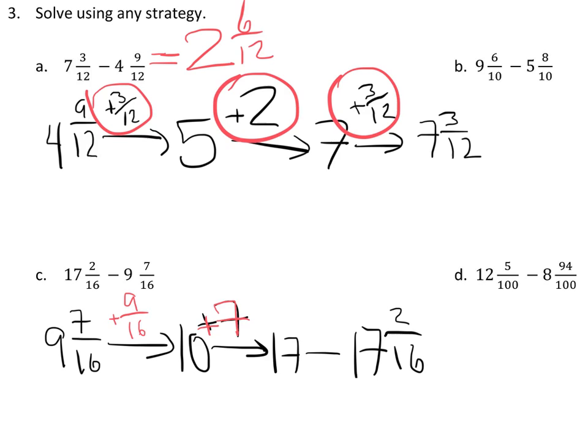And now I'm going to have to go up two-sixteenths more to get me to seventeen and two-sixteenths. And my answer, of course, is the space between, a total of seven and eleven-sixteenths.